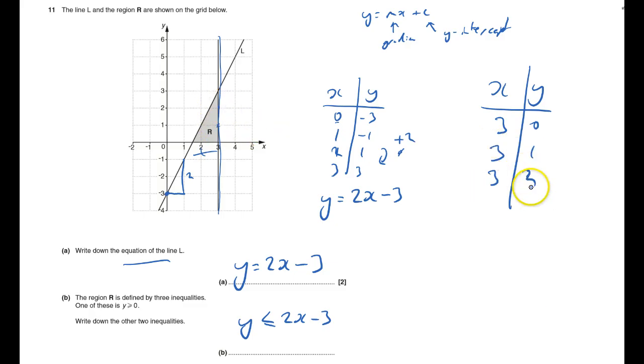And basically, x is always 3. So x equals 3 is that line. We want to the left of that line. So we want where x is lower than that. So x is less than or equal to 3. And that's question 11 done.